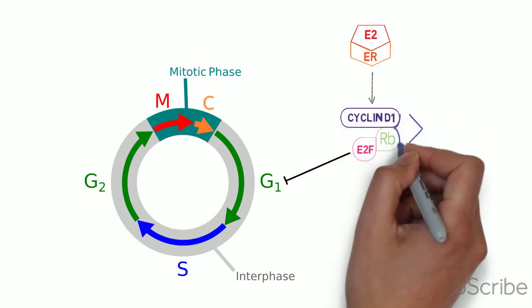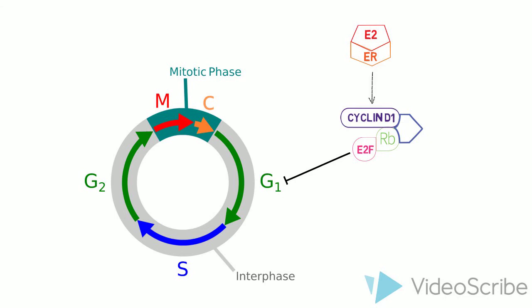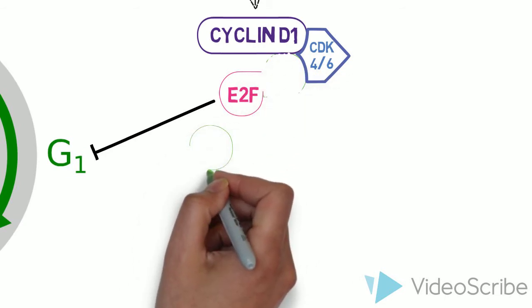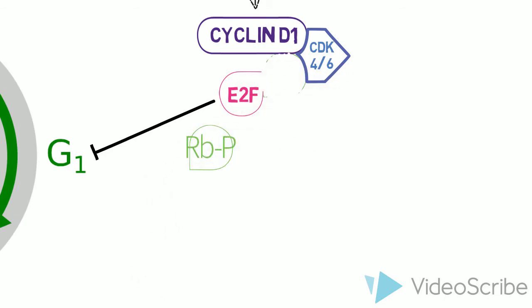Cyclin D forms a complex with cyclin dependent kinase 4 and 6. This complex causes the retinoblastoma protein in the E2F blastoma complex to become hyperphosphorylated and released. This has 3 effects.